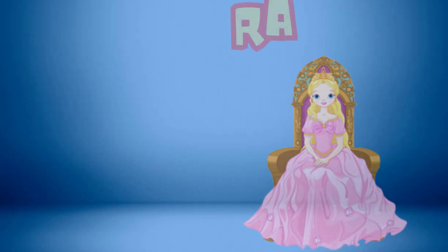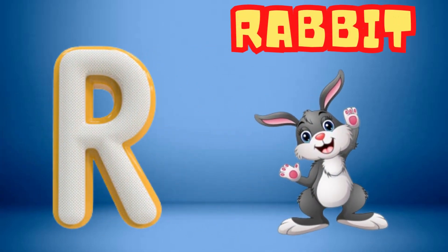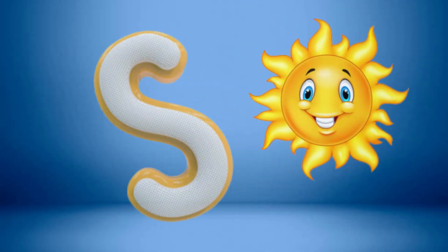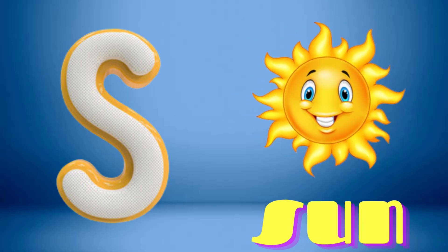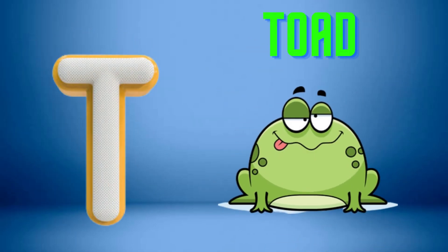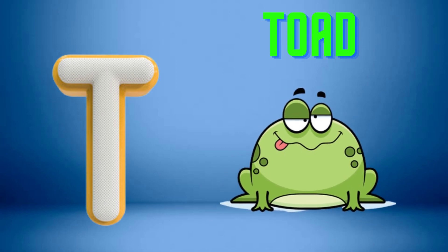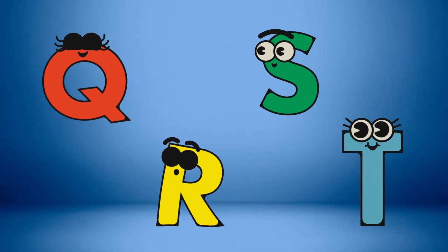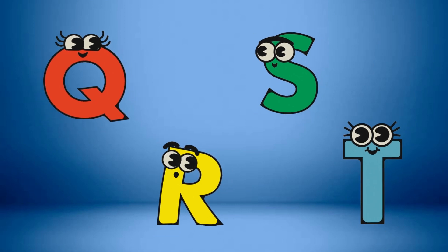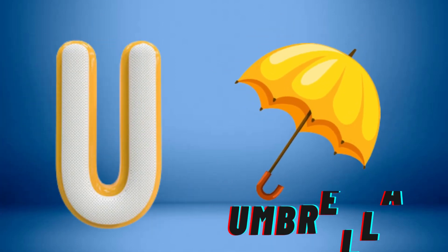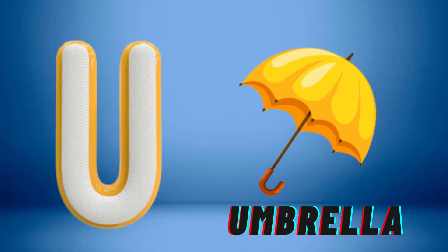Q is for Queen, Q-Q-Queen. R is for Rabbit, R-R-Rabbit. S is for Sun, S-S-Sun. T is for Toad, T-T-Toad.